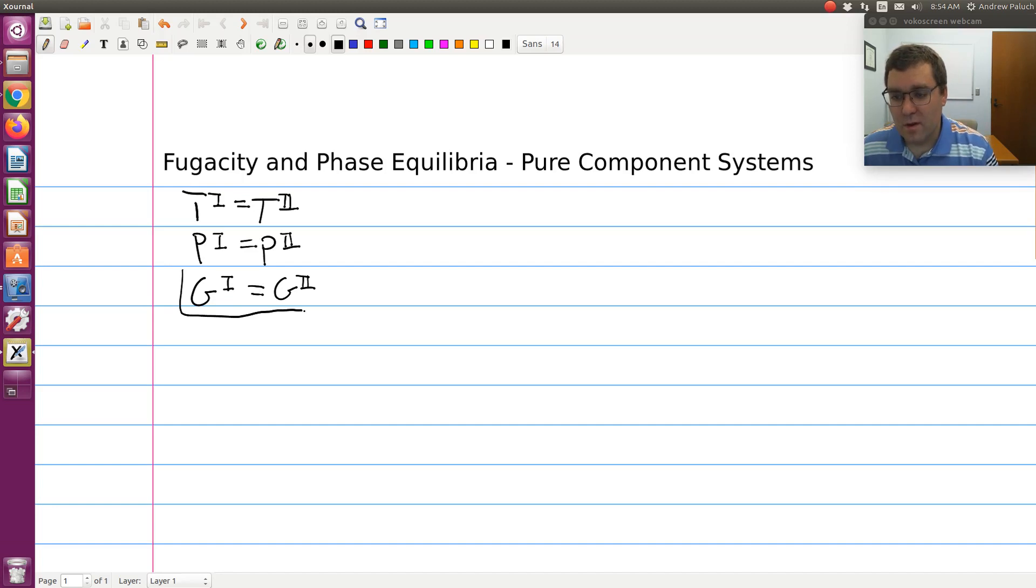So if I take my isomolar Gibbs free energy criteria, I know that my two phases are at the same temperature and pressure. So if I fully write this out, I'd have that the Gibbs free energy, molar Gibbs free energy of phase one at T and P is equal to the molar Gibbs free energy of phase two at the same temperature and pressure.